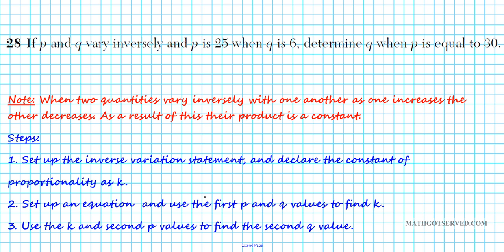And then our equation will involve the use of P, Q, and K, the first ones, because we're given initial values for P and Q here. We'll use those two with our K. And then after that, we're going to use that equation to find K. And then we'll use K and the second P value to find what Q is. Okay, let's go ahead and do this.